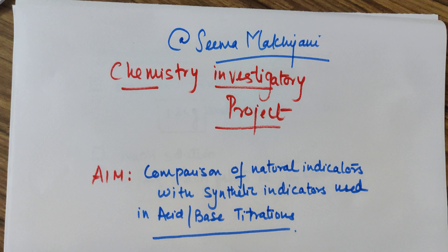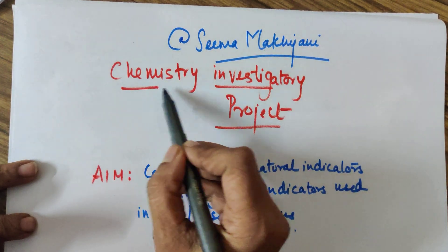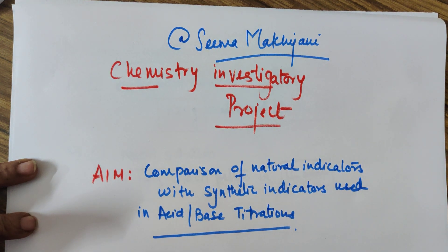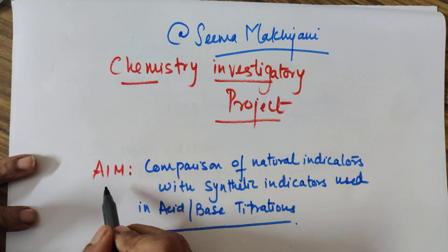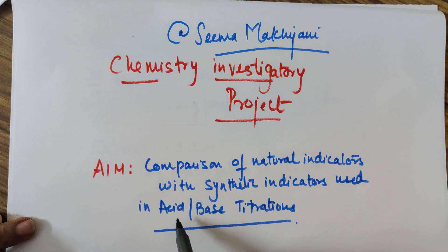A very good evening Class 12th. This time I have come up with a video where I will be doing a chemistry investigatory project in detail. I thought I will be going one by one in detail with the project ideas. So the aim for today's project is you need to compare natural indicators with synthetic indicators that are used in acid base titration.